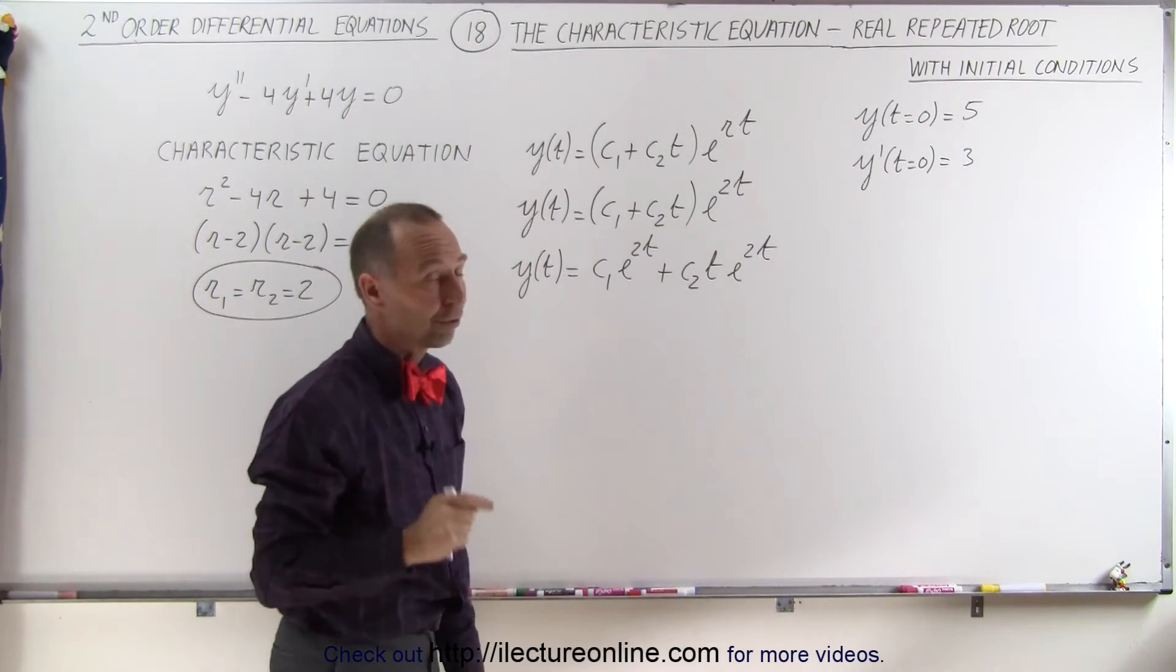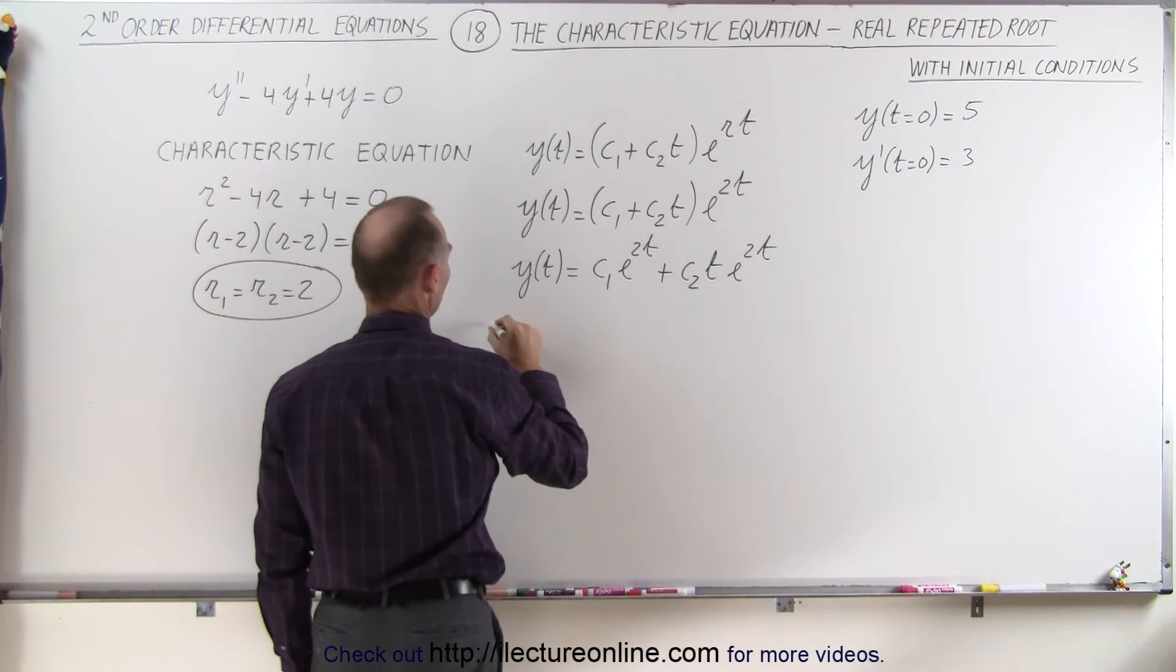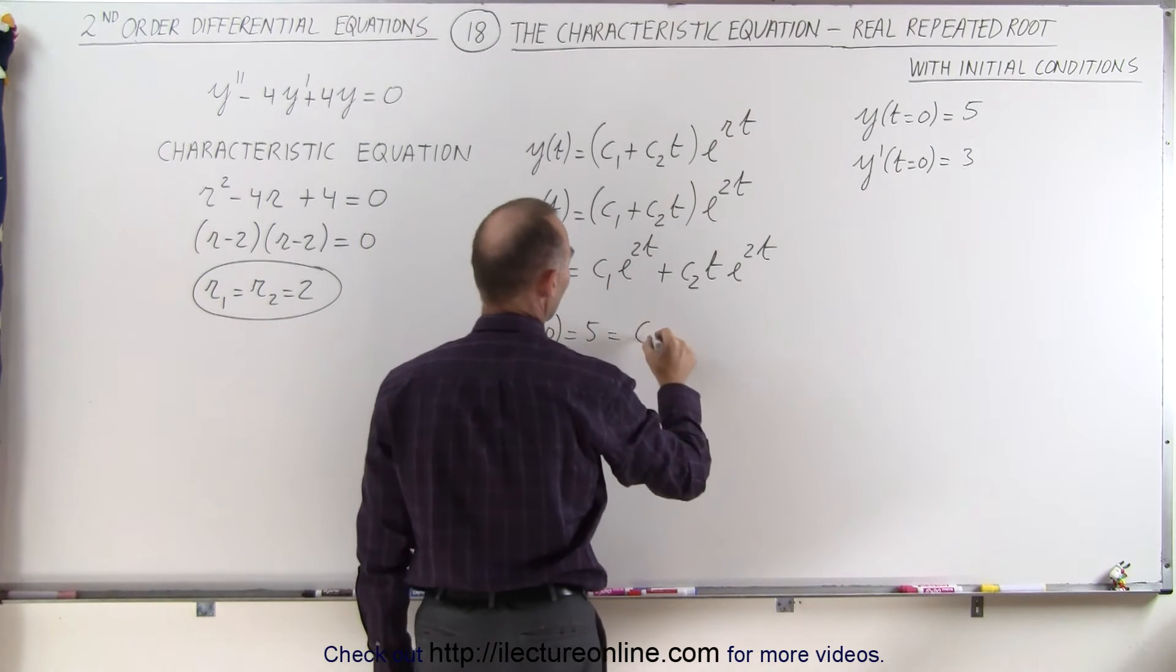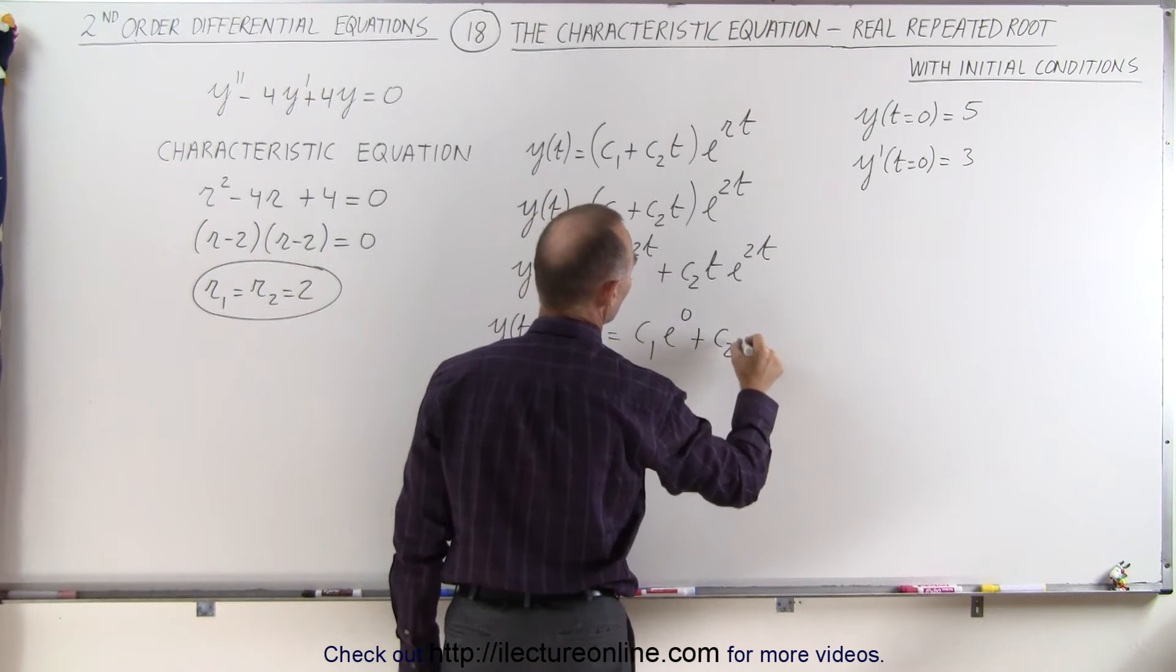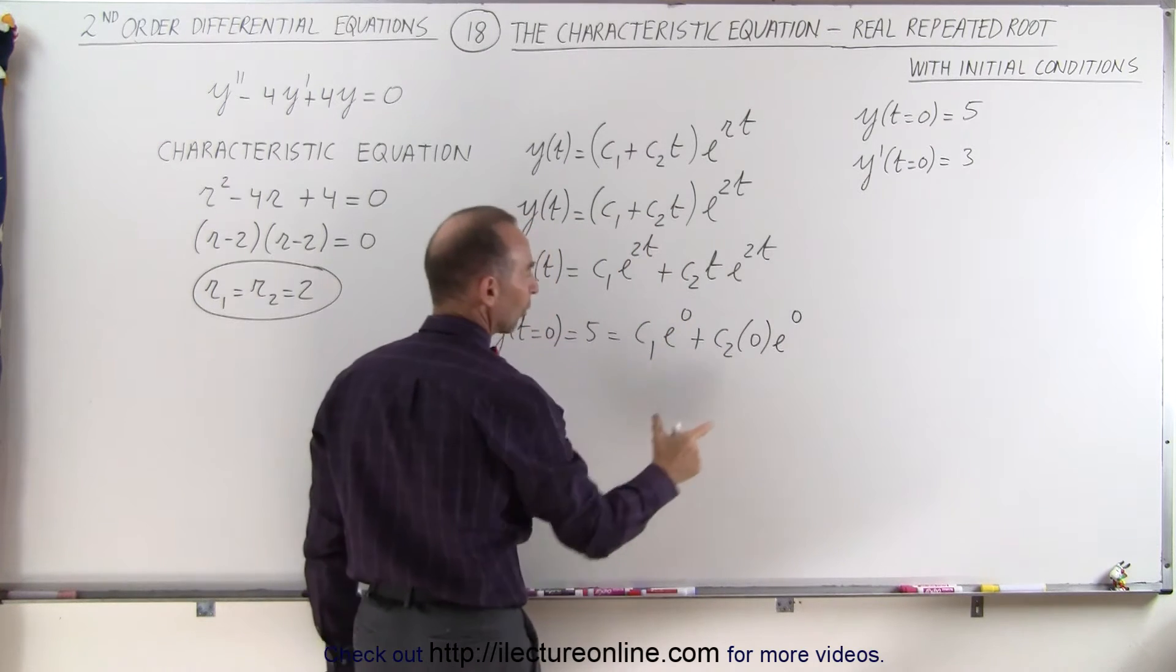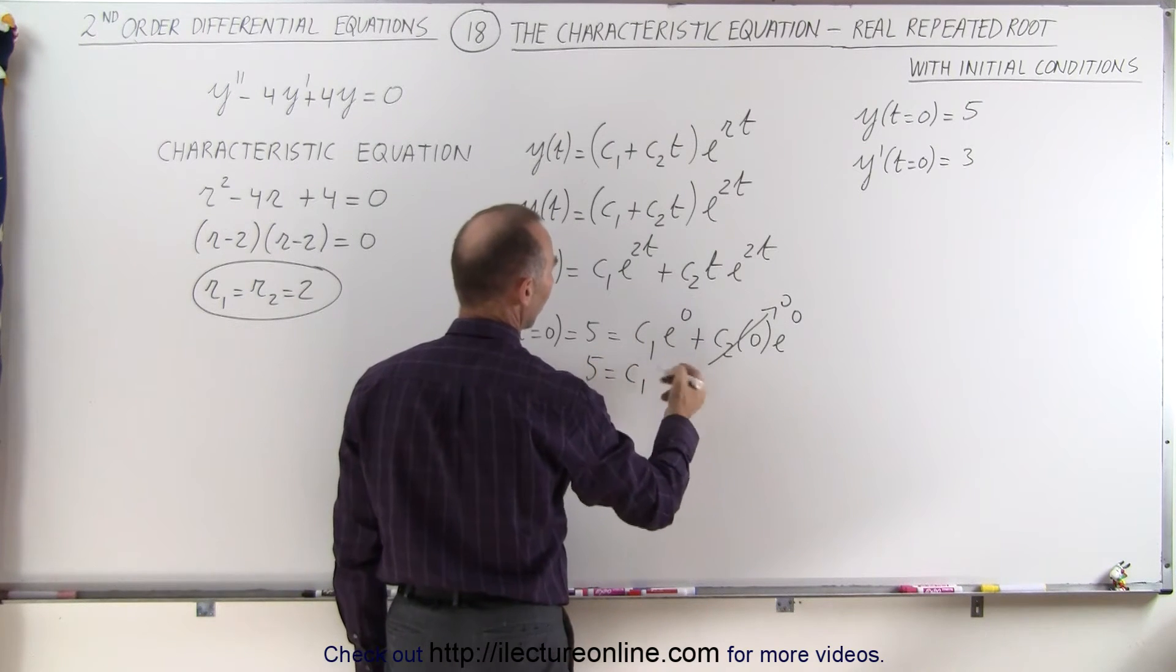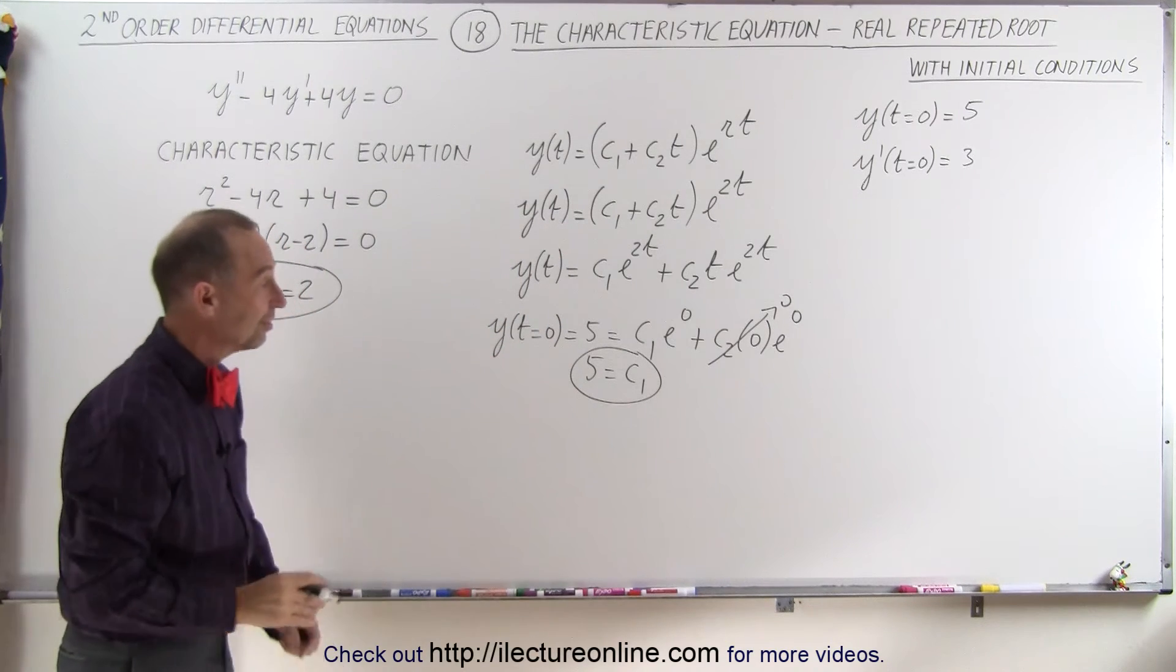And now first we're going to use our first initial condition, the function when t is equal to 0. So y when t is equal to 0 is going to be equal to 5, which is equal to c1 e to the 0 plus c2 times 0 times e to the 0. Of course this portion here will go to 0, which means that 5 is equal to c1 times 1, or simply 5 is equal to c1. So c1 was easy to find.